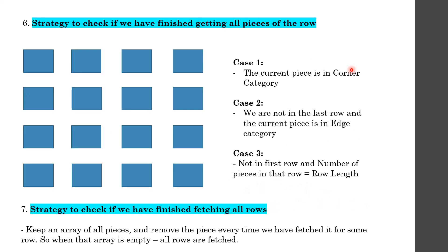To check whether all pieces in a row have been fetched, there are three cases: first, if the current piece is a corner piece (applicable to row 1 or the final row); second, if we are not in the last row and the current piece is an edge piece; or third, if we are not in the first row and the number of pieces fetched equals the known row length. After completing the first row, we know the row length and can use it for subsequent comparisons.